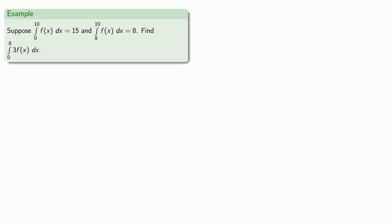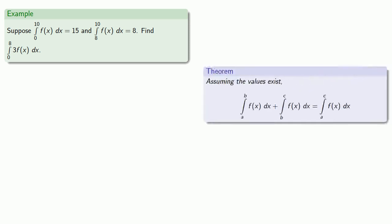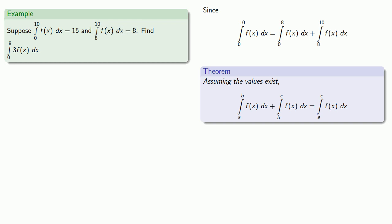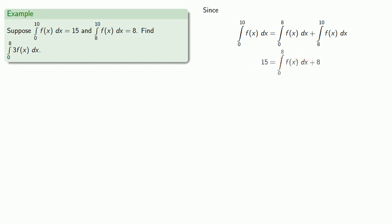We can put our theorems together to find the values of many definite integrals. For example, suppose I know the integral from 0 to 10 and the integral from 8 to 10, and I want to find the integral from 0 to 8 of something else. I'll work with the two integrals that have the same integrand over overlapping intervals, using the theorem that allows me to split the interval of integration at 8. Substituting in the known values leaves the integral from 0 to 8 as the only unknown, so we can solve for it. This is a true statement, and these intermediate results are almost always useful.